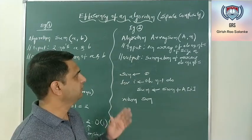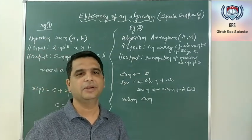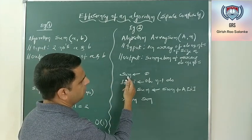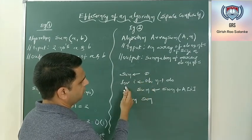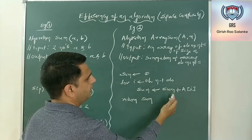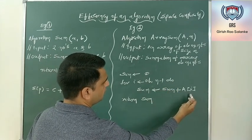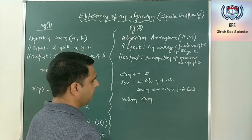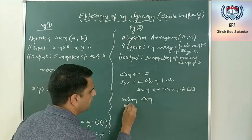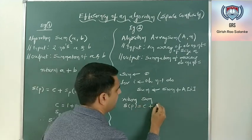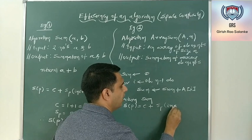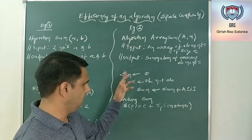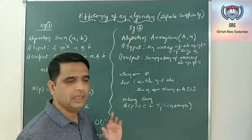Now coming to the second algorithm, which finds the summation of all elements stored in an array. In this algorithm, there is a variable 'sum' initialized to 0, a for loop executed from 0 to N minus 1, and each value of A at location i is added to 'sum', and finally we return the value of sum. Using the formula S(P) = C + SP(instance), C is the constant part and SP is the auxiliary part.